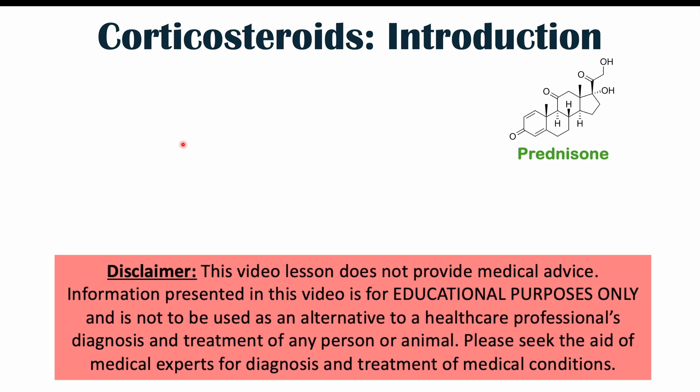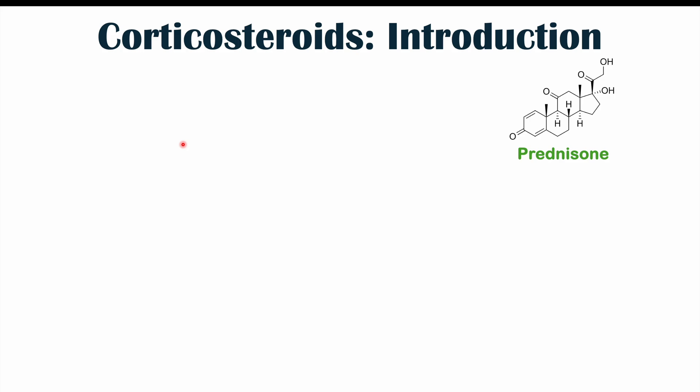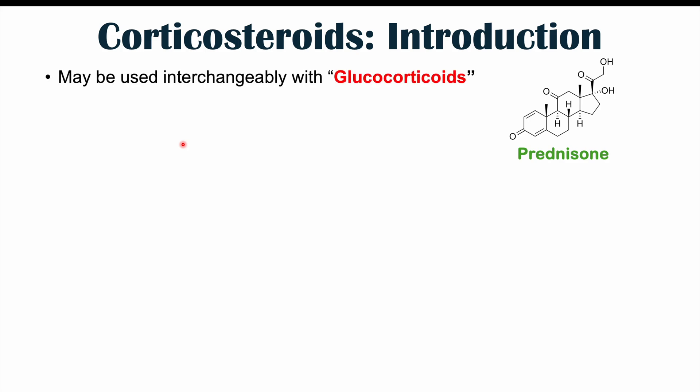Hi everyone. This lesson is on the side effects and health consequences of corticosteroid use, especially systemic use. So corticosteroids, or glucocorticoids as they are also referred to, can have many different side effects and health consequences. This is going to be part one. In this lesson, we're going to discuss the health consequences on the musculoskeletal system, the endocrine system, the dermatological system, and the immune system.